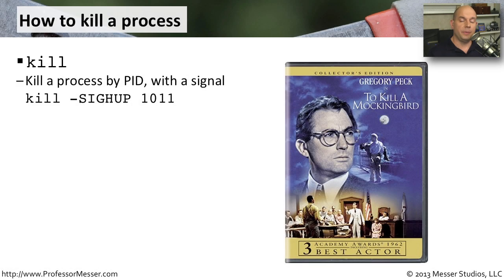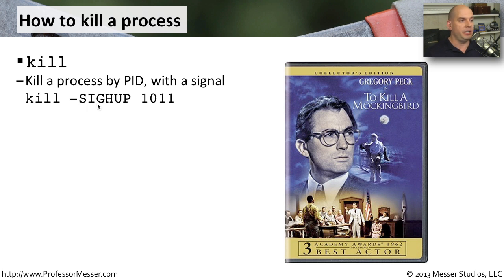To terminate processes, we'll use one of two different commands. If you know the process ID, you will use the kill command. The kill command allows you to specify a signal and then the process ID to terminate or restart that process. The syntax is: kill, then dash and the signal — you can use either the signal name, for instance SIGHUP, or the number associated with that signal, such as kill -1. Then you put the process ID for the process you want to terminate.